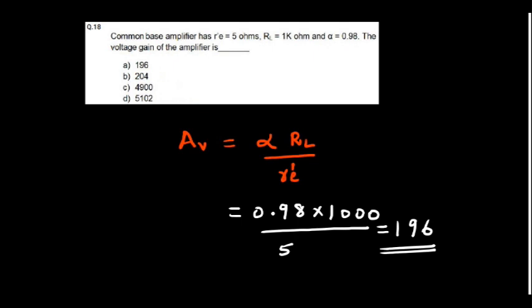A common base amplifier has RE dash 5 ohms, RL 1 kilo ohm and alpha 0.980. The voltage gain of the amplifier is alpha RL upon RE dash. RE dash is the emitter resistance seen by the AC source. If you apply, you will get 196. That is the voltage gain.